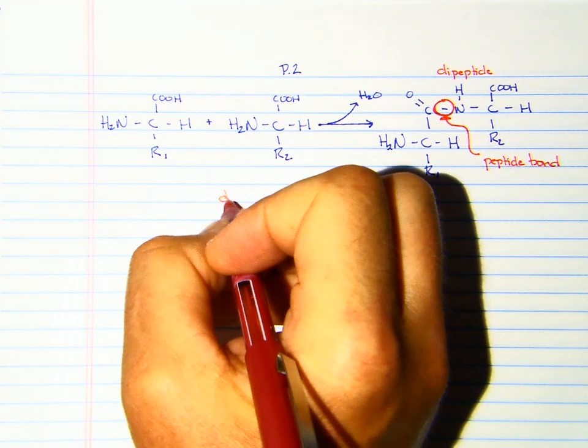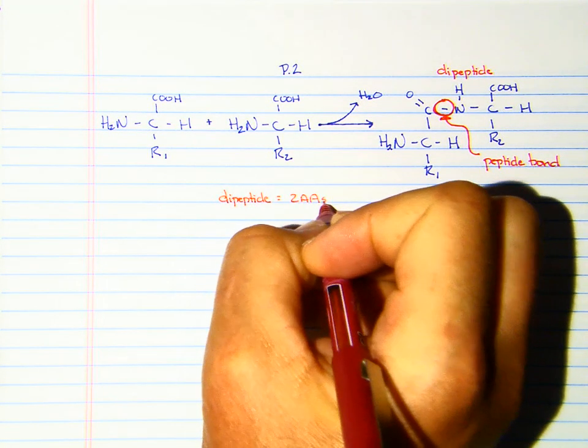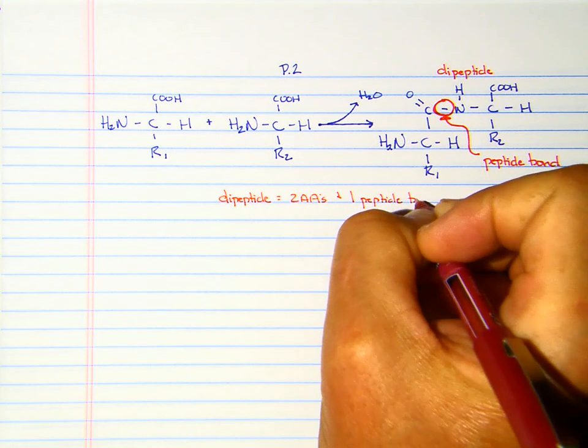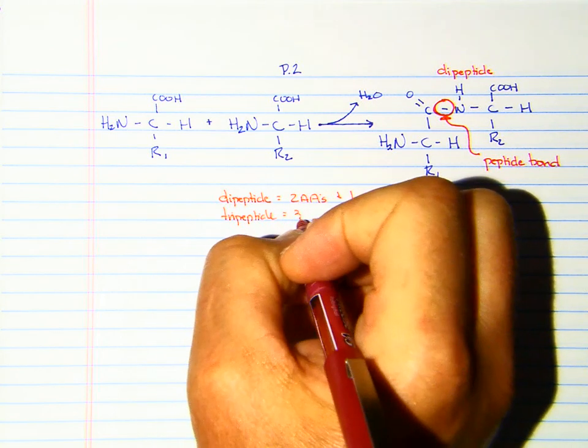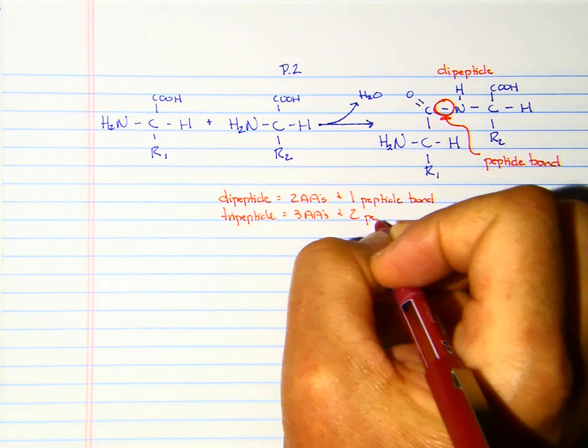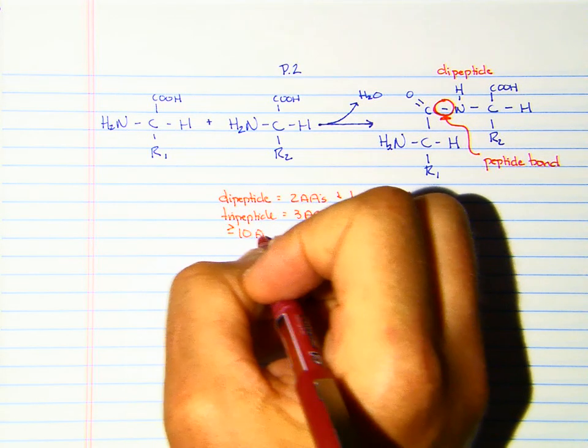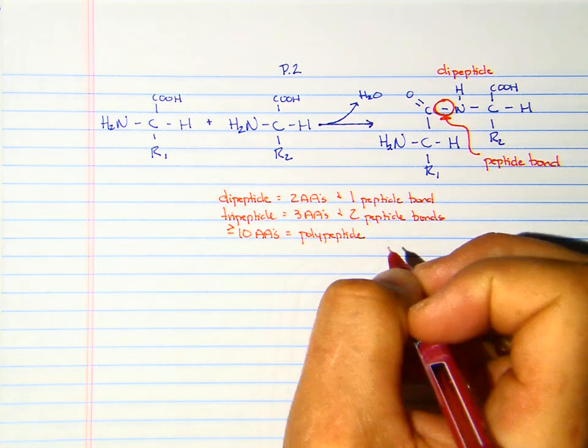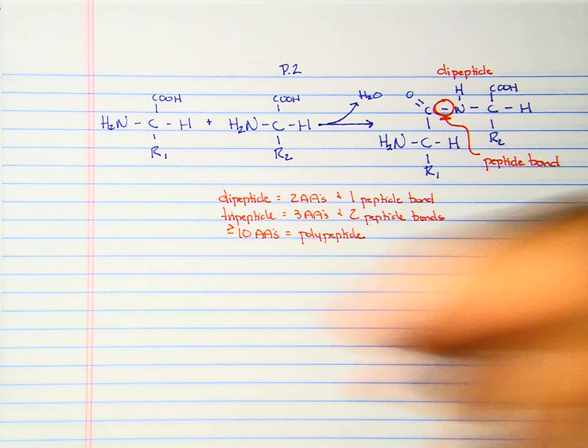Here we have dipeptides. A dipeptide contains two amino acids and one peptide bond. A tripeptide contains three amino acids and two peptide bonds. Greater than or equal to 10 amino acids linked together equals a polypeptide. We're most interested in breaking peptide bonds to form dipeptides, tripeptides, and amino acids so we can digest them.